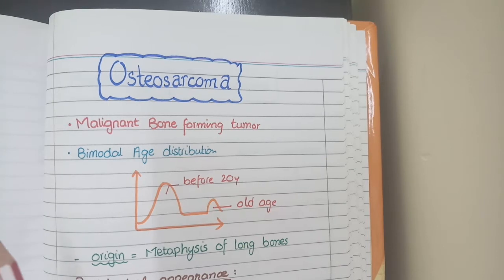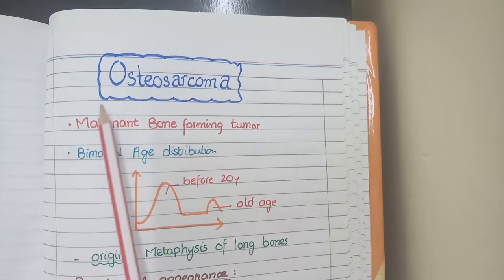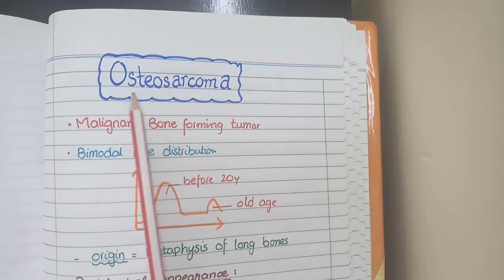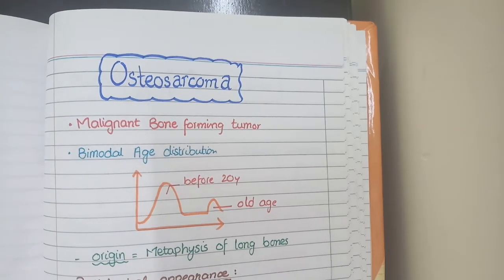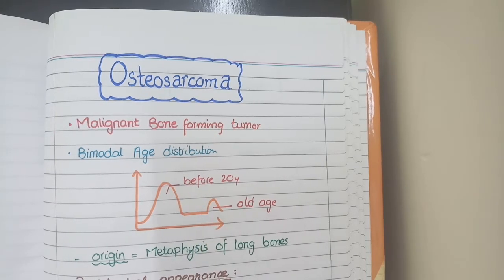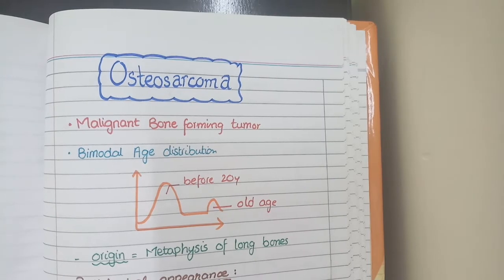Keep this point in mind that all tumors containing the word 'osteo' develop in the young age group of less than 30 years. For example, osteoid osteoma and osteoblastoma develop in the younger age group.